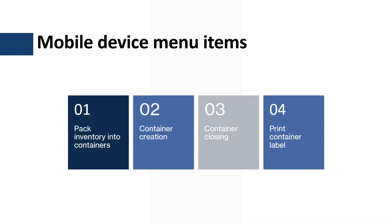This feature introduces four menu items to support the packing process. The first is Pack Inventory into Containers, used for the main packing process. The second is Container Creation, used to create containers. The third is Container Closing, used to close shipment containers. The last menu item is used to print containers.